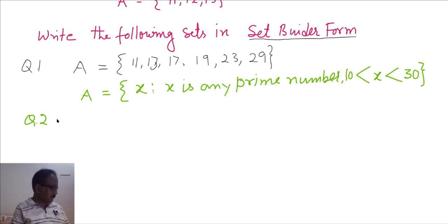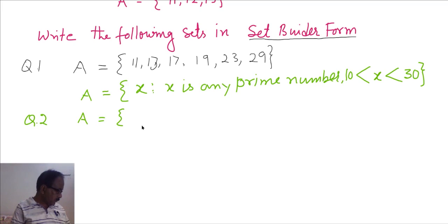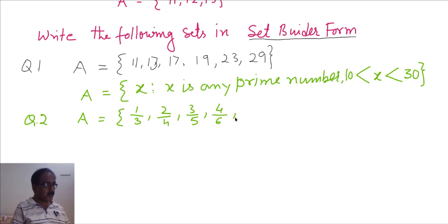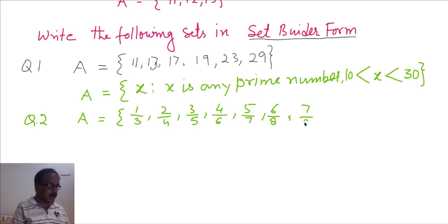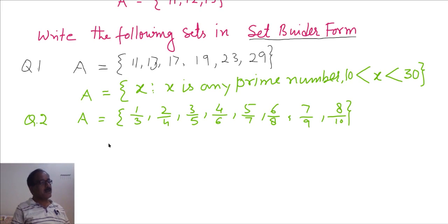See another problem. If a set A is {1/3, 2/4, 3/5, 4/6, 5/7, 6/8, 7/9, and 8/10}. This is a set whose elements are 1/3, 2/4, 3/5, 4/6, 5/7, 6/8, 7/9, and 8/10.